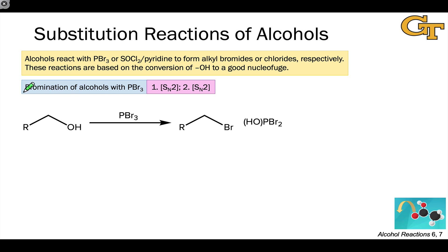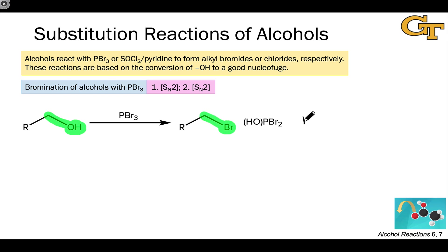First, let's look at the bromination of alcohols using PBr3. The basic transformation is that the alcohol hydroxyl group is substituted with a bromine group. I've also drawn the phosphorus-containing byproduct of this reaction, and if we draw out a full Lewis structure, we can see that a substitution has also occurred at phosphorus.